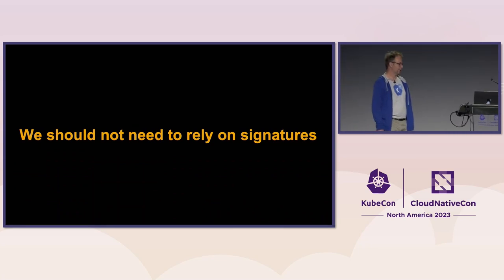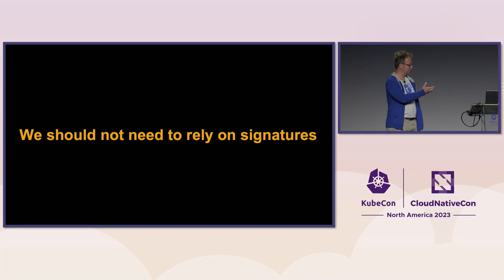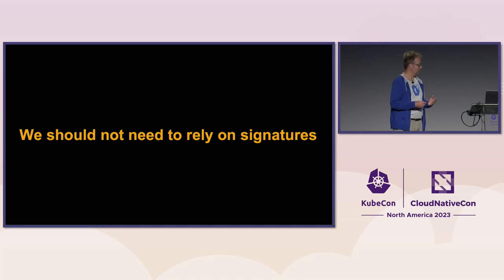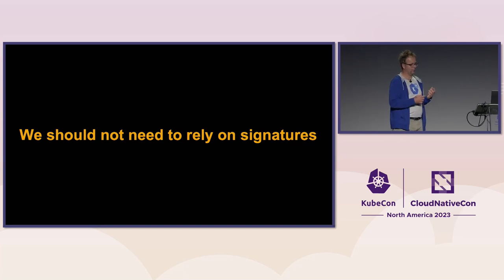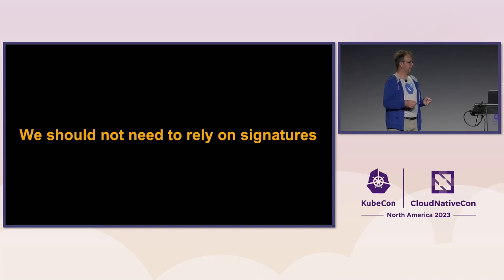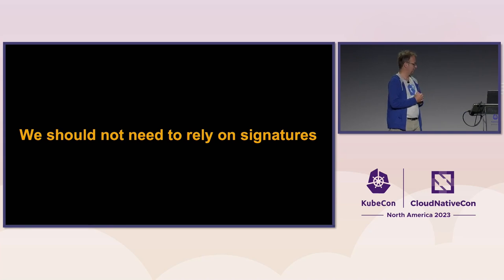I wonder how we can go ahead in this game. Usually you have to track all the signatures that are available. But isn't there a way to prevent or detect exploits and block them in advance without knowing the actual exploit? That would be a real advantage — maybe then we can go to the beach as well.